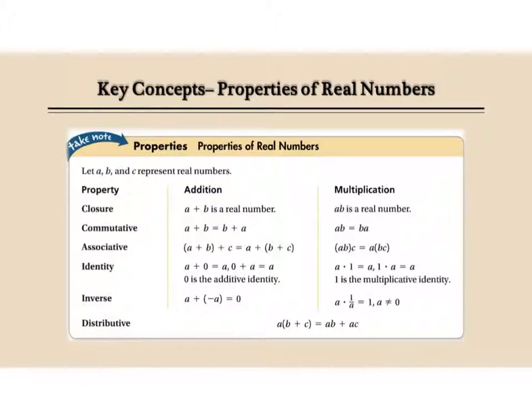Here are the properties of real numbers that we're going to be looking at. We're really not going to look at closure, but we're going to look at commutative, associative, identity, inverse, and distributive.